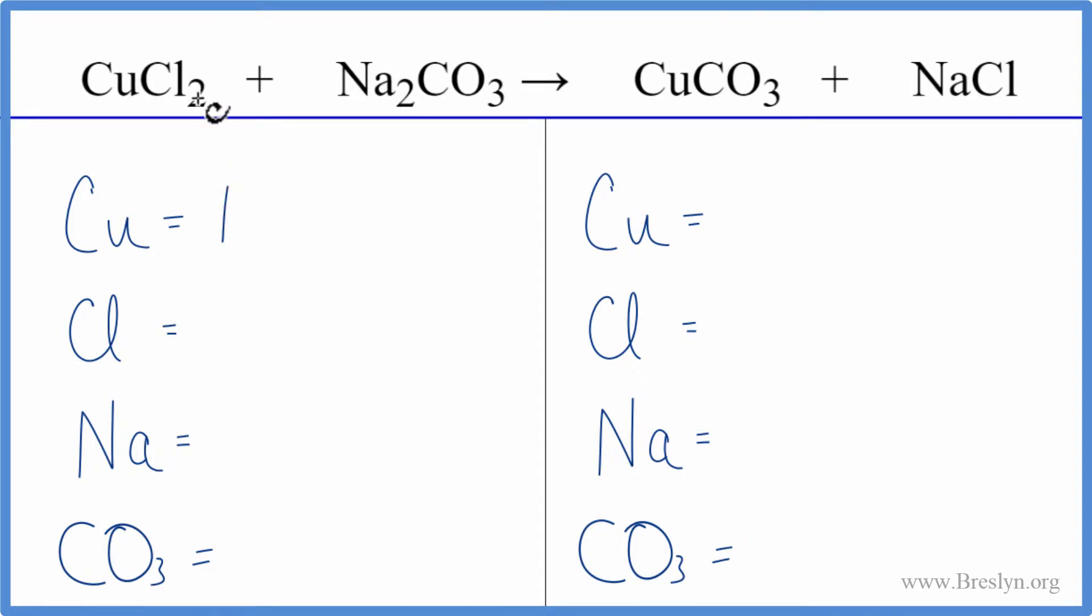We have one copper, two chlorines, two sodiums, and because we have this carbonate here and it stays together in the reaction, it's a polyatomic ion, we're gonna count the carbonate as just one thing. That makes it a lot easier.